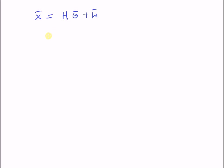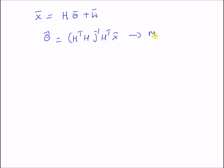The necessary condition for the estimator of the parameter vector theta bar to exist is that the inverse of the matrix H transpose H should exist. That is, theta hat = (H^T H)^{-1} H^T X bar, which is the minimum variance unbiased (MVU) estimator. For this estimator to exist, the inverse matrix must be valid — that is, H^T H must have an inverse.